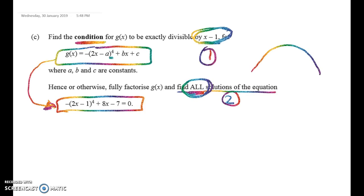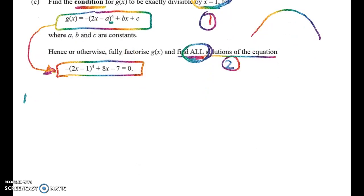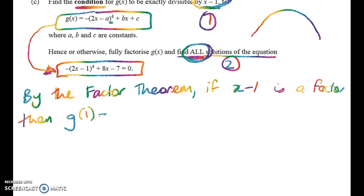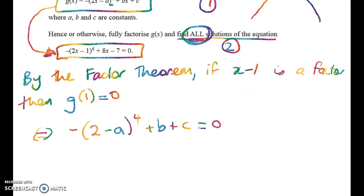Find the condition for this to be exactly divisible by x minus one. By the factor theorem, if x minus one is a factor, which is what exactly divisible is all about, then we have g(1) equals zero. So we can substitute in x equals one, and this is what we get: negative (2 minus a) to the power of 4 plus b plus c equals zero. So the first thing I can do is I can rewrite that in some way.